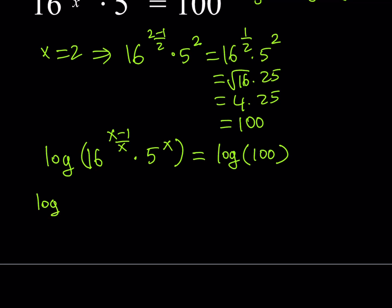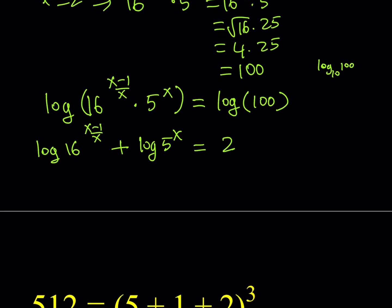The idea here is if you have a product like log(a·b), you can basically write it as log a plus log b. And you can prove this easily using the definition of logs. So that means I can split it up. We're going to be getting log(16^((x-1)/x)) plus log(5^x). What is log 100 in base 10? Well, it means you're looking for a number, 10 to the power of that number needs to be 100. So that number is 2. In other words, it's the number of zeros.